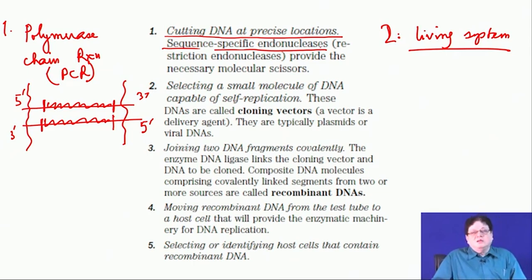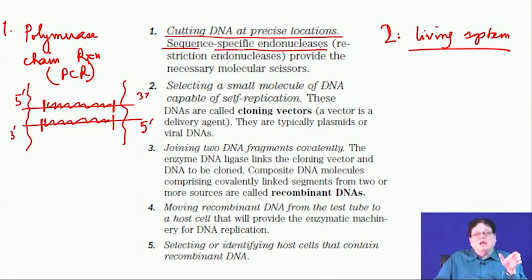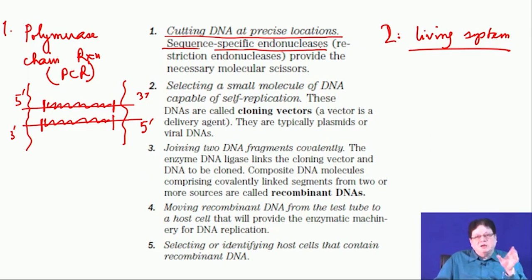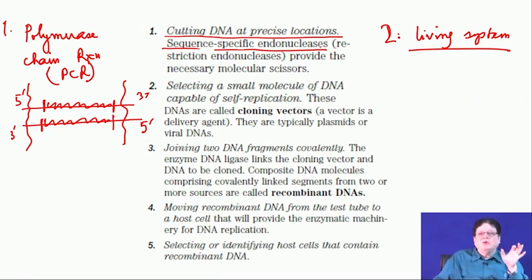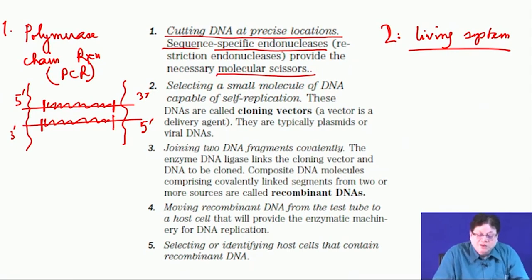Restriction enzymes are endonucleases that recognize specific sequences, and the beauty of these sequences is that they are all palindromic. That means if you read from 5' to 3' on one strand and read the other strand from 5' to 3', you get the same sequence. This gives the sequence a local C2 symmetry. These palindromic sequences are recognized by restriction endonucleases — essentially molecular scissors.